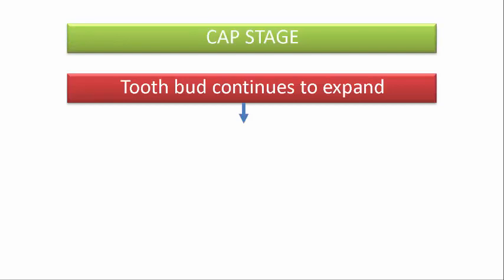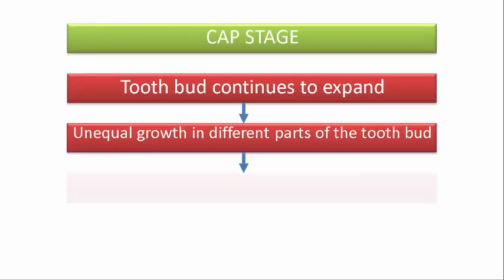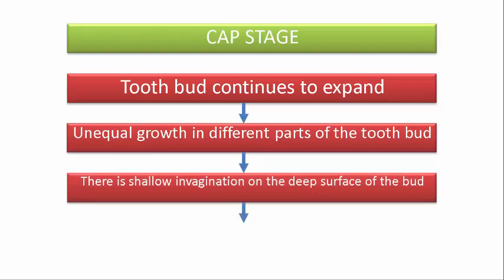The second stage is the cap stage. The tooth bud continues to expand, and unequal growth occurs in different parts of the tooth. There is a shallow invagination on the deep surface of the bud, which leads to the formation of the cap stage. It looks like a cap, hence the name cap stage.